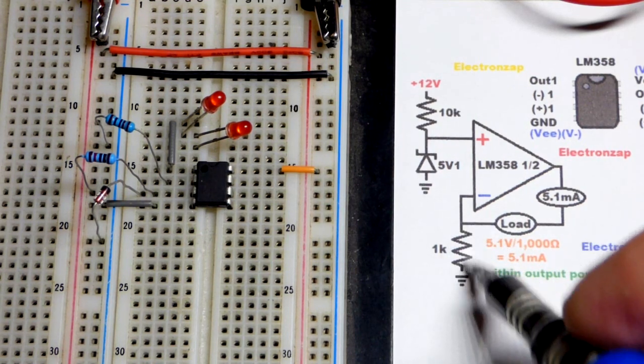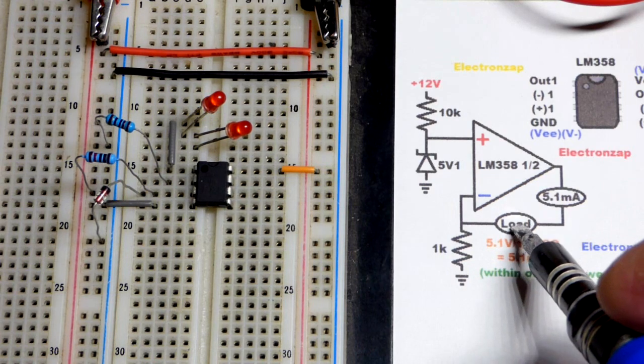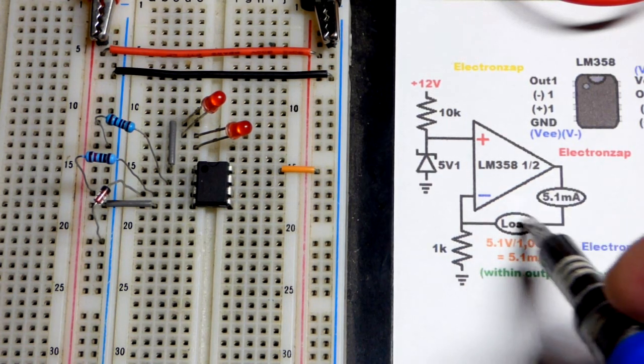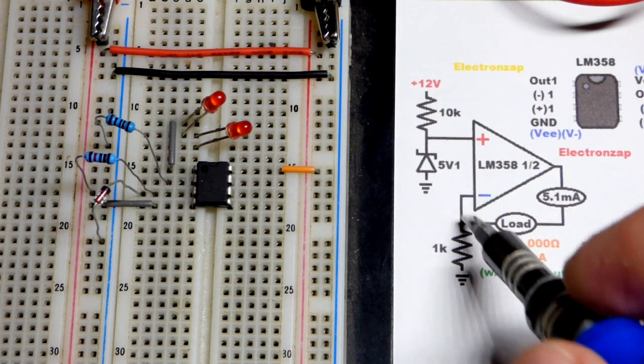So that 5.1 volts now will be across that 1,000 ohm resistor. That is what sets the current even if there's a load there. Because remember it will raise the voltage as needed and provide the current that's needed to get 5.1 volts since that's what we set.